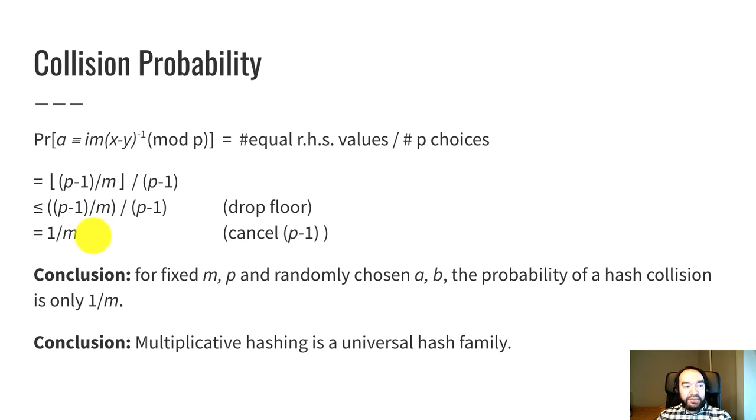And so our conclusion is that multiplicative hashing really is a universal hash family. It has both of the properties we need. It's consistent and the probability of a collision is low. It's this one over M expression.